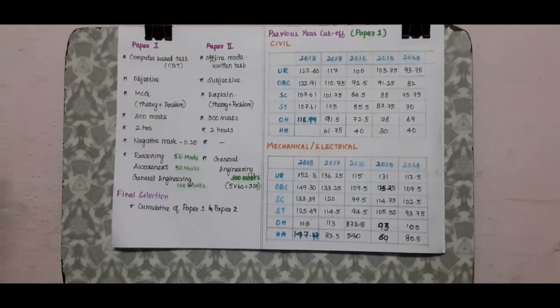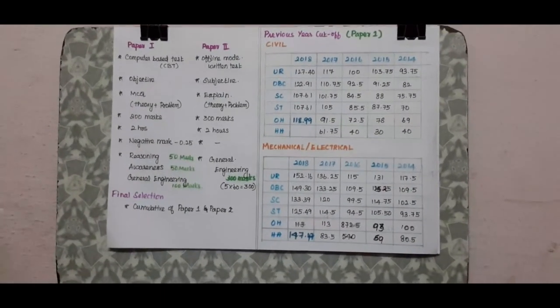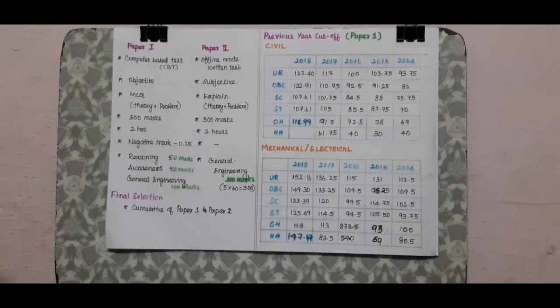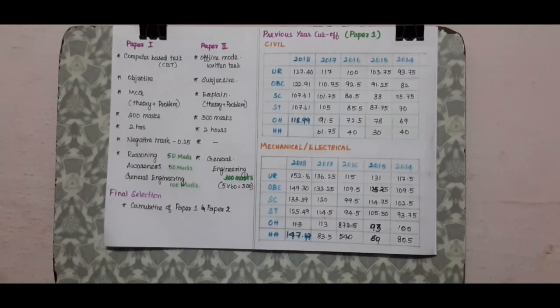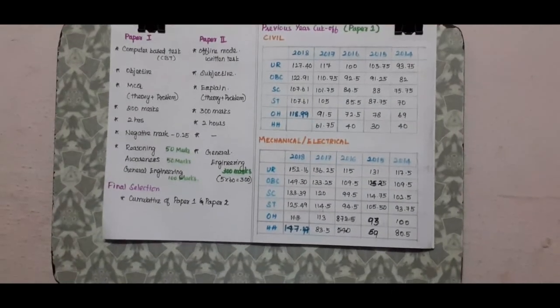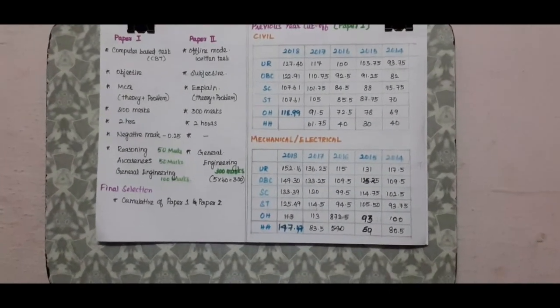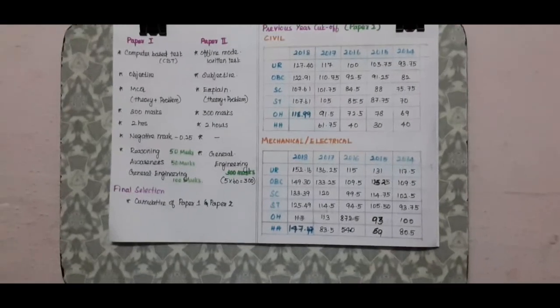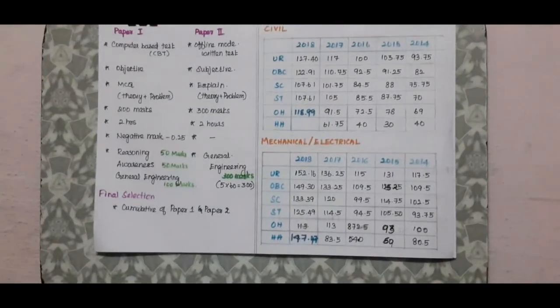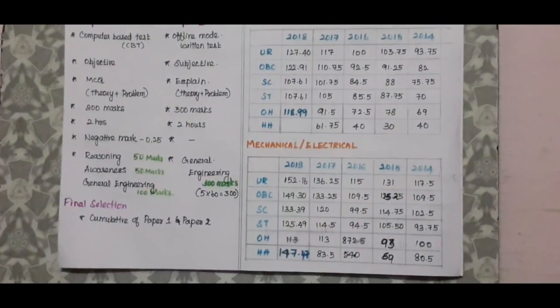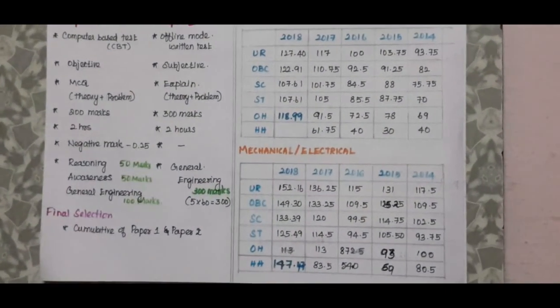In 2014, the unreserved cutoff was 117.5; in 2015 it increased, and continued to increase in 2016. From 2017 to 2018 the trend continued upward.